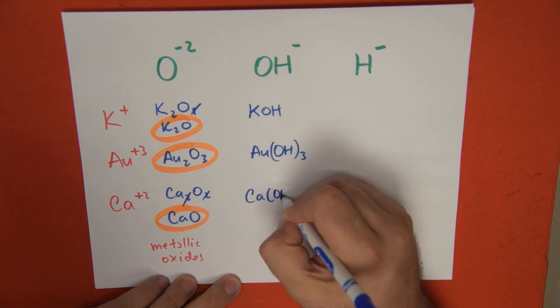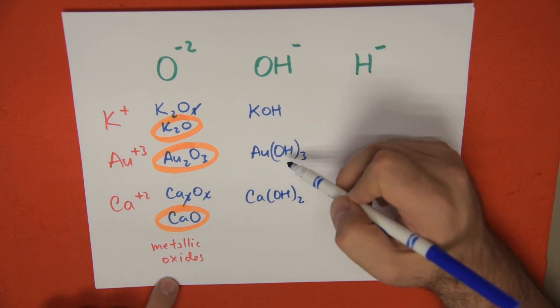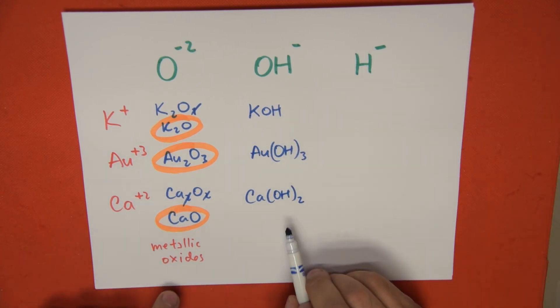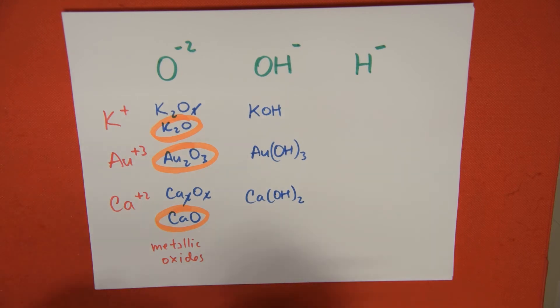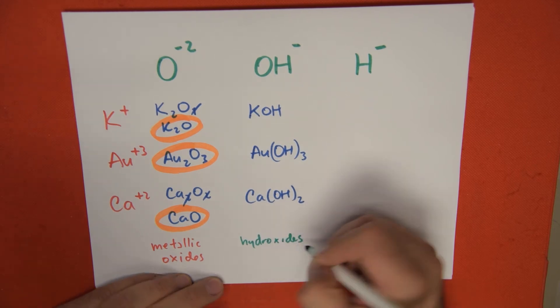Potassium hydroxide, gold-three hydroxide, and calcium hydroxide. And these are called hydroxides, as our name suggests.